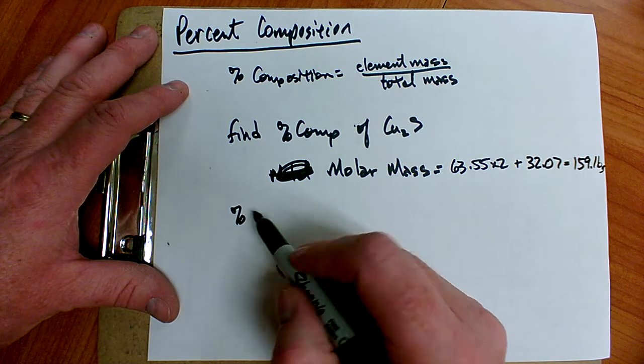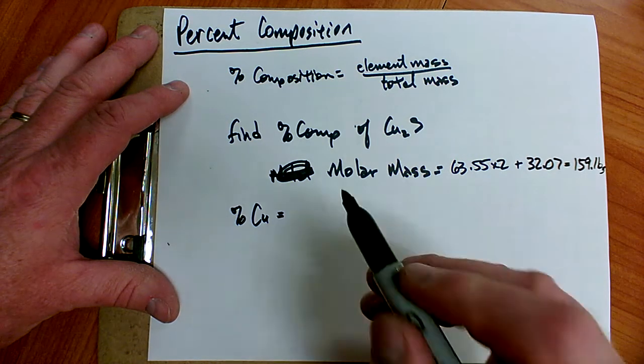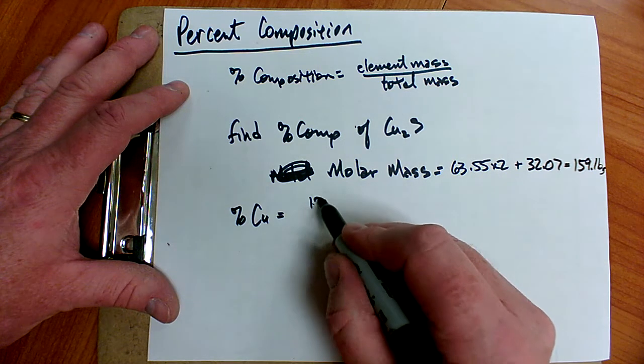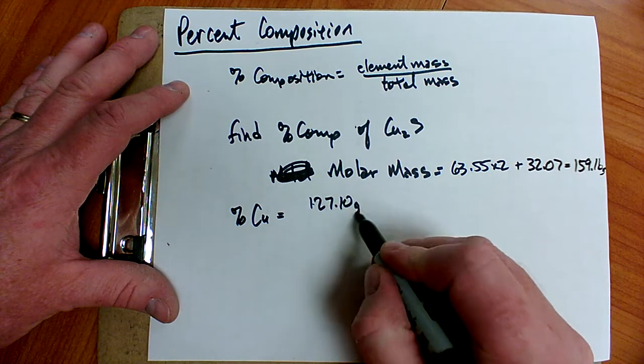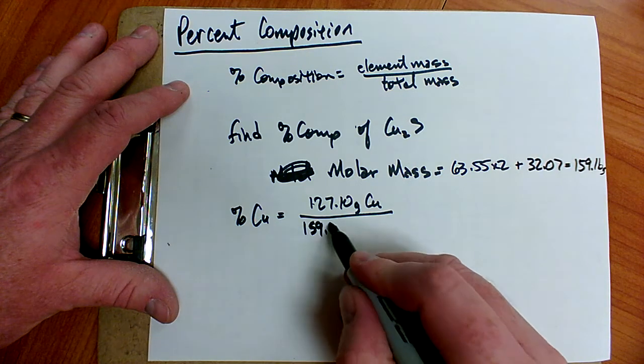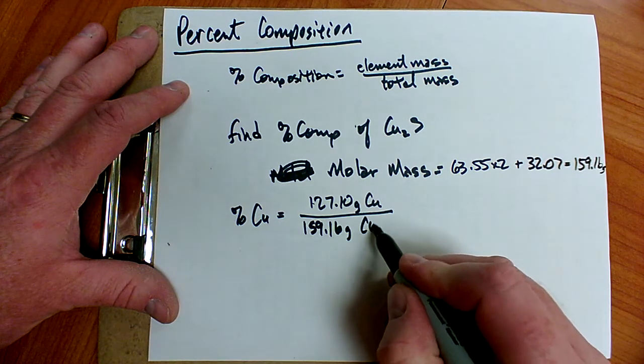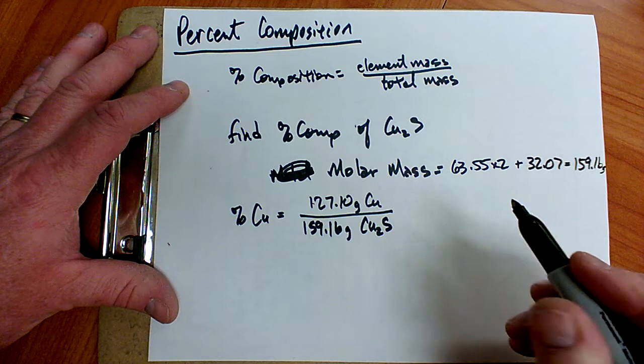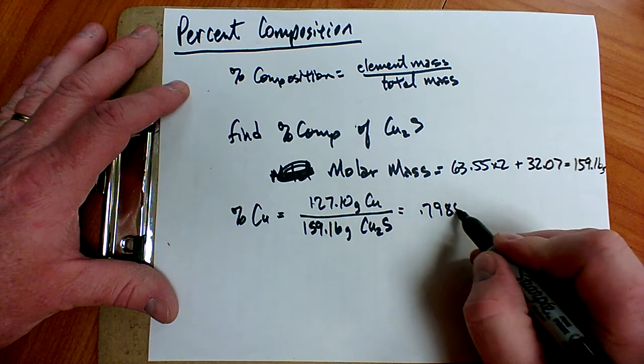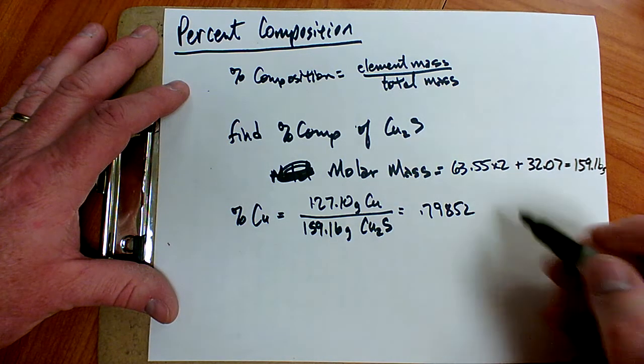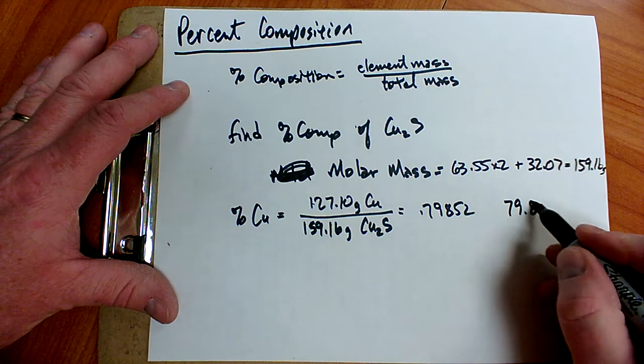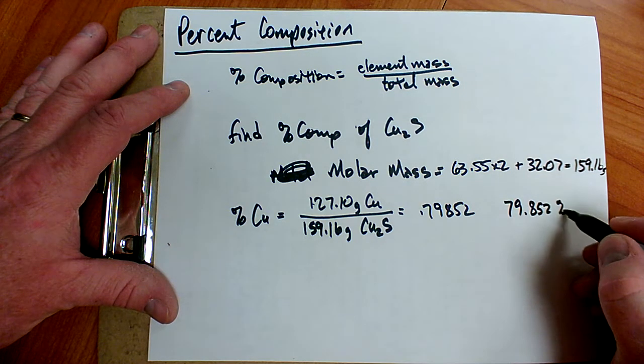Now to find the percent composition, how much of it is copper, I simply take the mass of copper, which is 63.55 times 2. That's 127.10 grams of copper divided by the total mass of the compound, 159.16 grams of copper-1-sulfide. And that's going to give me a number 0.79852. I convert that to a percent by moving the decimal twice. So it is 79.852 percent copper.